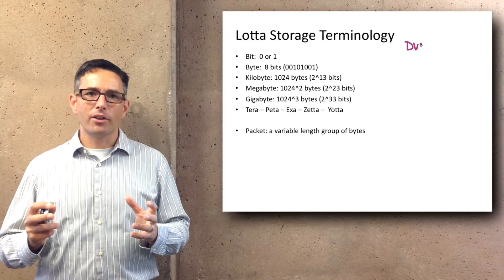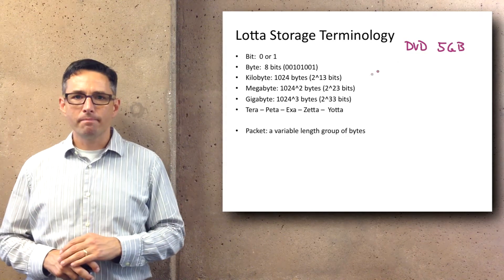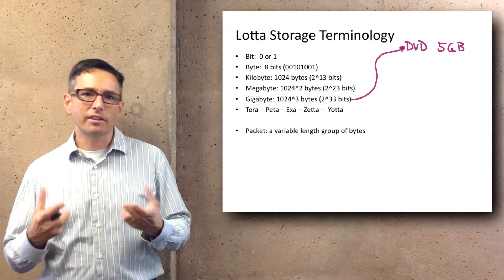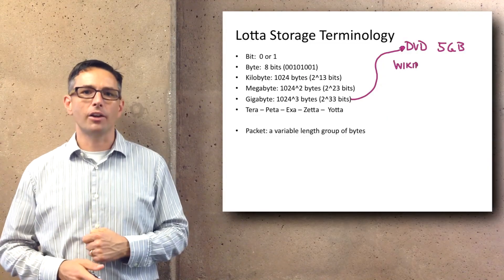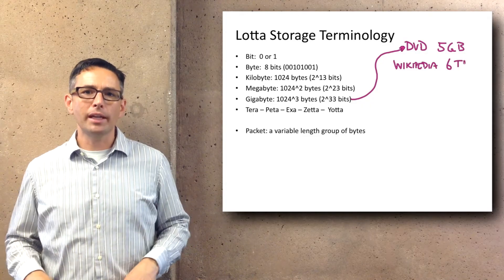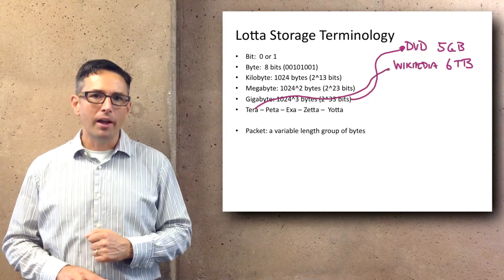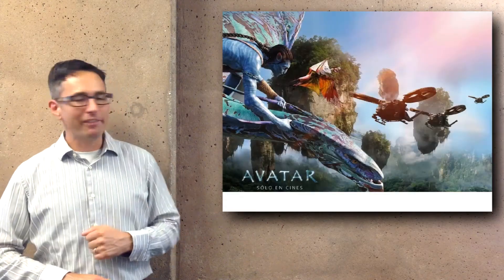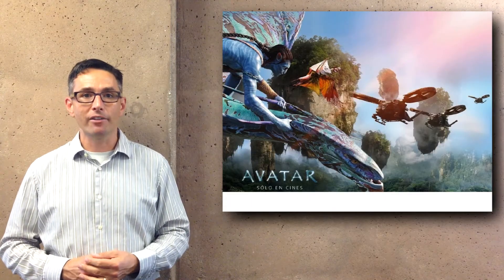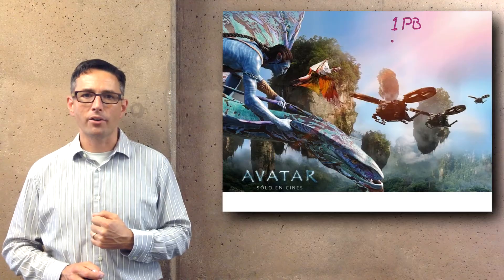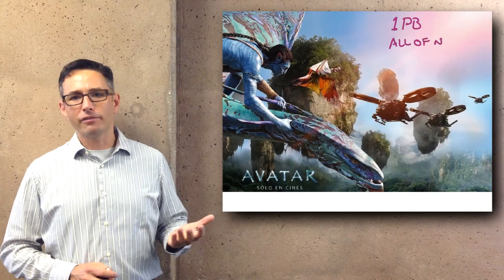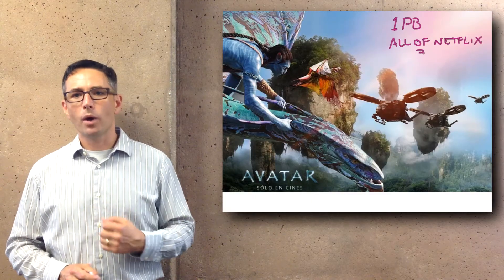Let's try and get some scale around those different terms. For starters, a DVD that you might have a movie on can hold about 5 gigabytes, so a digital movie is about 5 gigabytes. If you want to see a Netflix movie, you have to send about 5 gigabytes of packets over the Internet. If you wanted to get all of Wikipedia downloaded, that would require about 6 terabytes. Avatar was a heavily digitally produced movie and it required an estimated 1 petabyte of storage for all the digital models and rendering. All of Netflix's master copies of movies would require about 3 petabytes of storage.